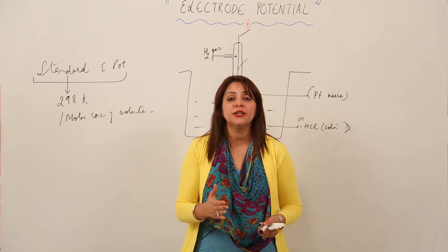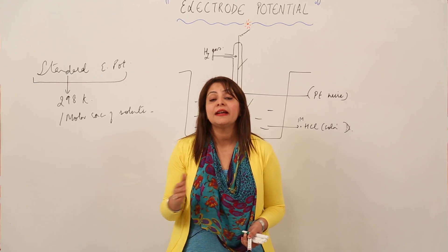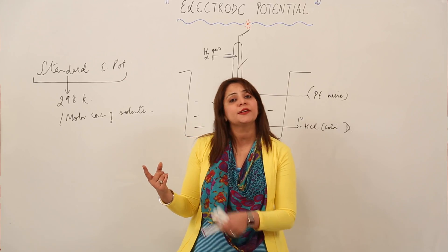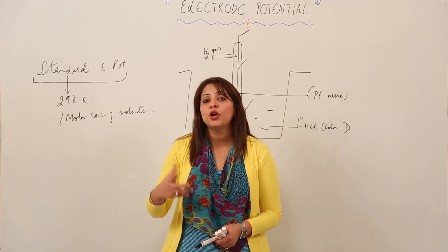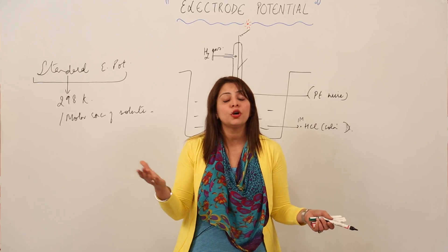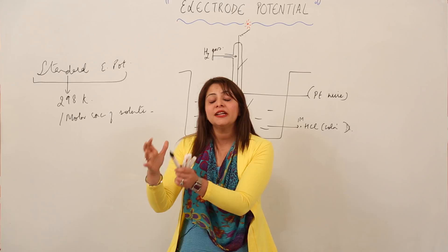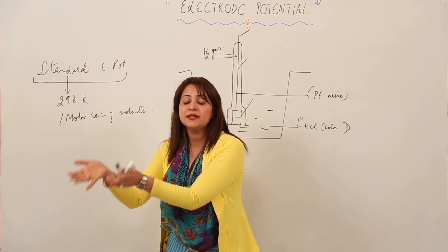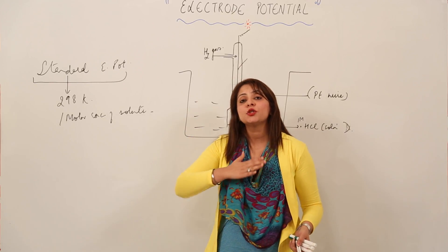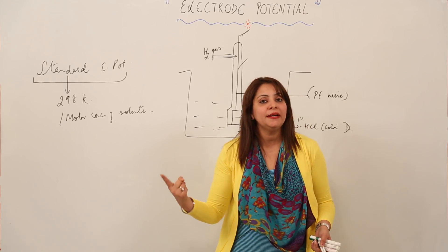It is not easy — in fact, not possible — to calculate the absolute value of electrode potential. The reason is that half-cell reactions do not take place independently. We need two half-cells present where oxidation and reduction both occur. Because it is a relative tendency, we can only compare — saying this electrode has a tendency to get oxidized or reduced when compared to another electrode.